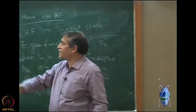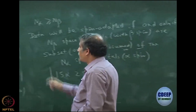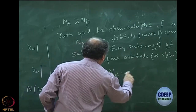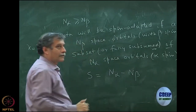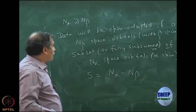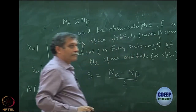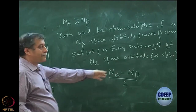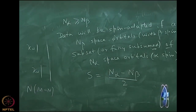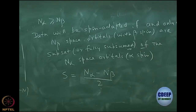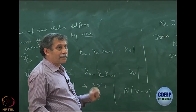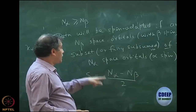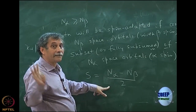In addition, n_alpha will have more space orbitals since n_alpha is greater than or equal to n_beta, and the determinant will be spin-adapted. The value of S will be (n_alpha minus n_beta)/2. For example here, S = (2-1)/2 = 1/2. M_s has the same value with h-bar. This is the strict theorem - I can look at any determinant and comment on whether it is spin-adapted.